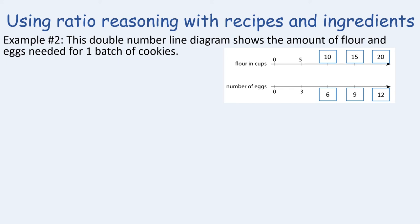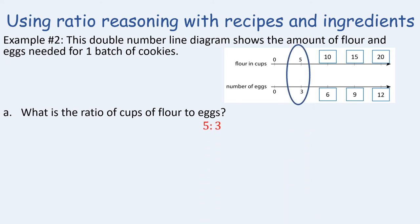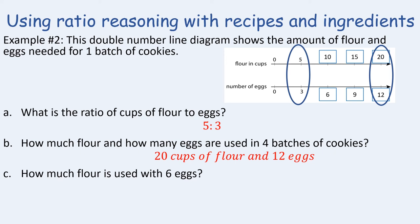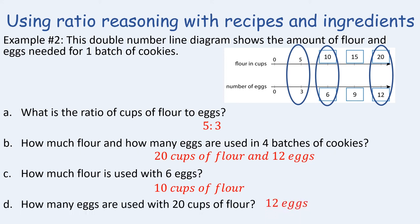Using the completed double number line, let's answer some questions. The ratio of cups of flour to eggs is five to three. For four batches, we need 20 cups of flour and 12 eggs. How much flour is used with six eggs? Six eggs corresponds to ten cups of flour. How many eggs are used with 20 cups of flour? That's in the fourth batch — twelve eggs. This is a great visual representation for recognizing patterns using ratio reasoning.